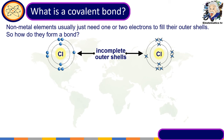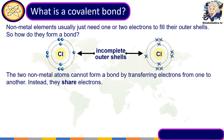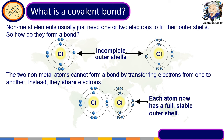Now let's look at covalent bonds. Unlike ionic bonds between metal and non-metal, covalent bonds occur between two non-metal elements. Non-metal elements usually need only one or two electrons to fill their outer shells. Since two non-metals cannot form a bond by transferring electrons, instead they share their electrons. For example, chlorine has seven valence electrons and needs one more — by sharing one electron each, both atoms now have a full stable outer shell, forming a covalent bond.